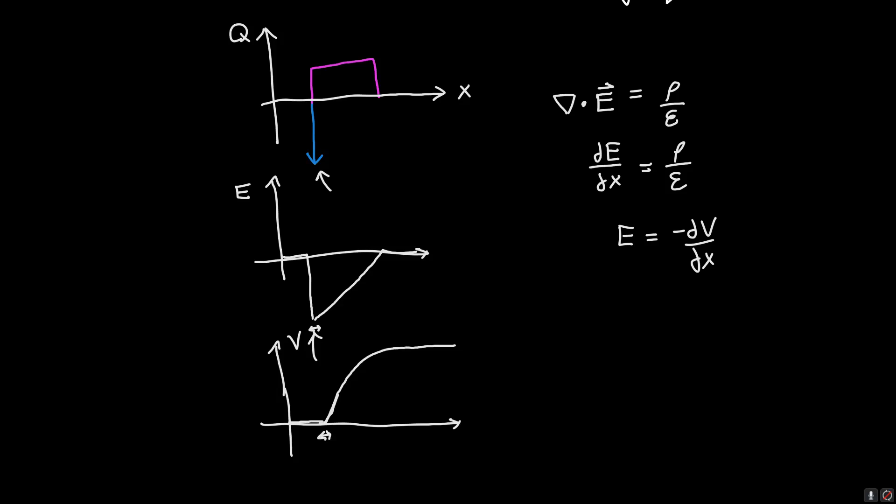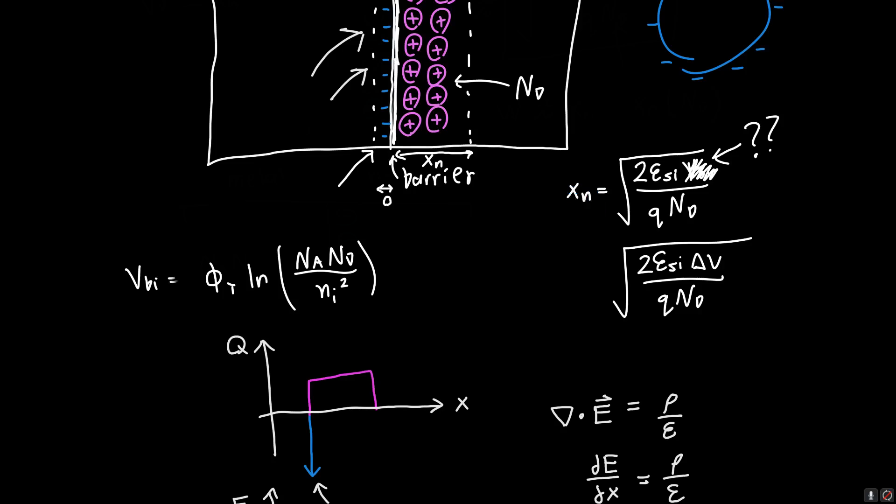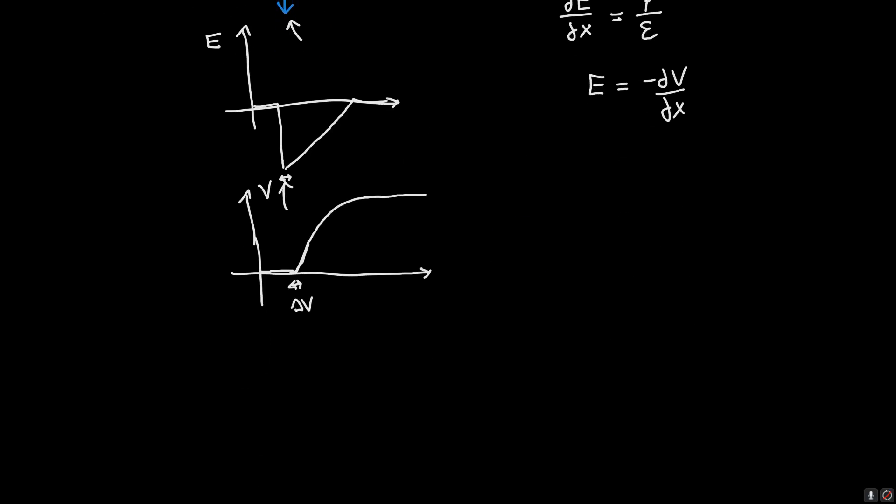The voltage drop across this region—Delta V across the region where we have all this negative charge—that voltage drop is zero. There is no voltage drop across this tiny charge region, and the reason is because of this integral. When we integrate the electric field, the voltage drop across that region is zero. The entire voltage drop Delta V is from this point, from the top of this curve.